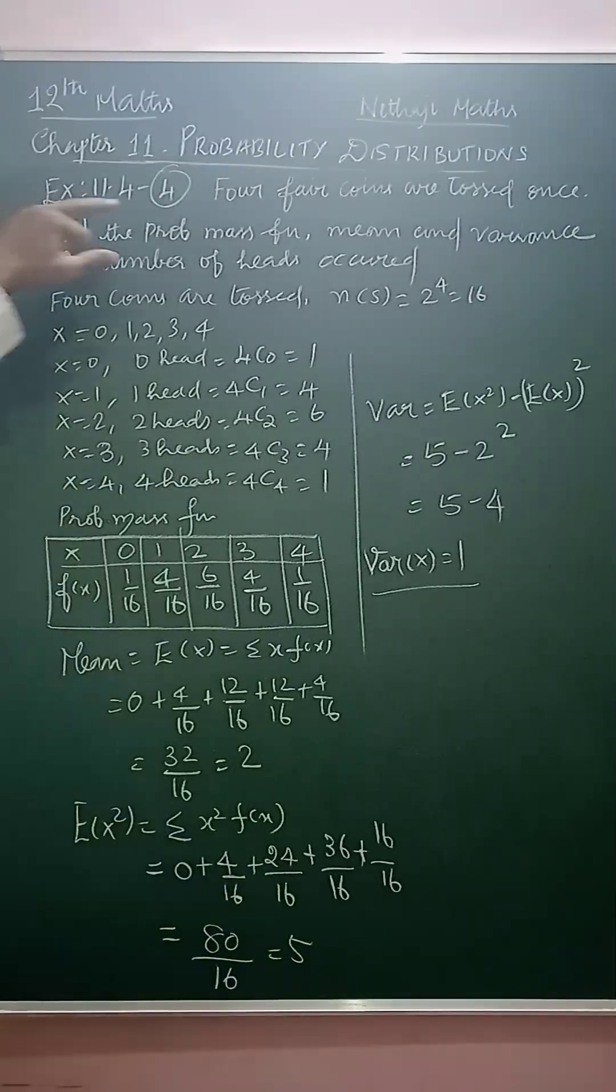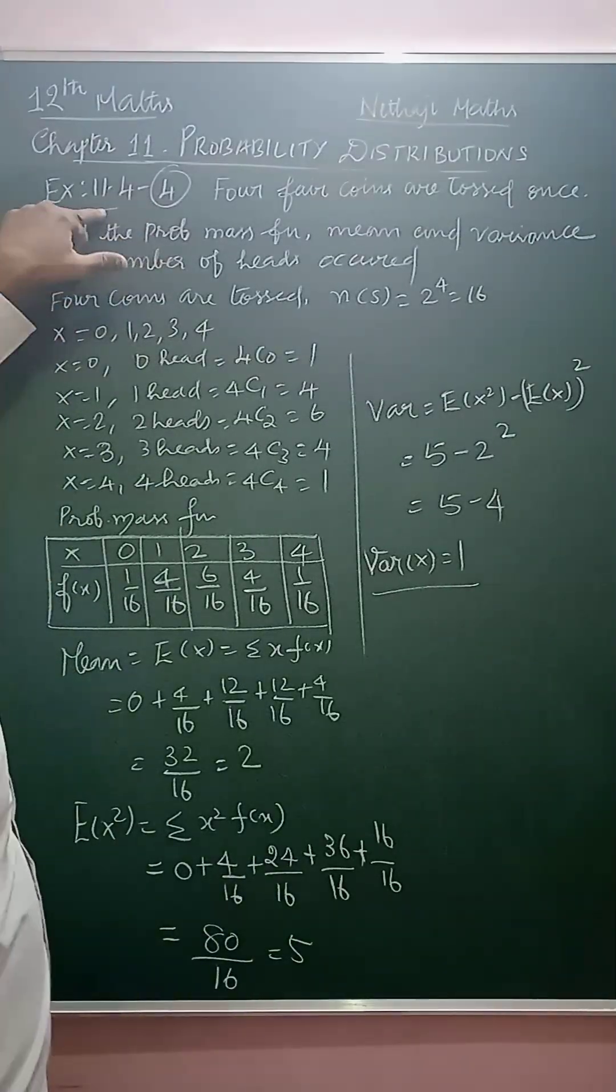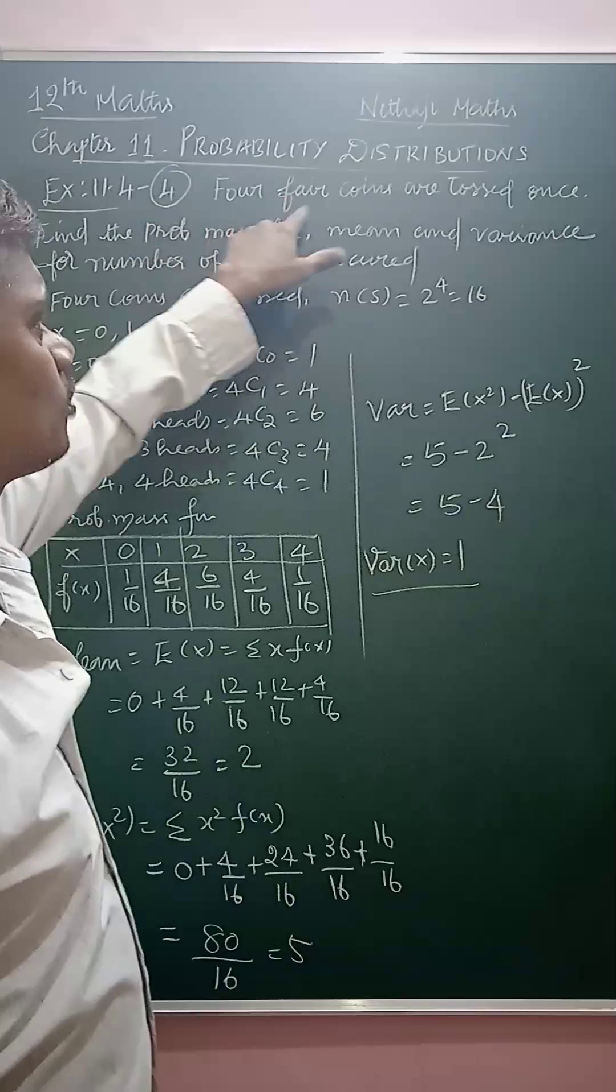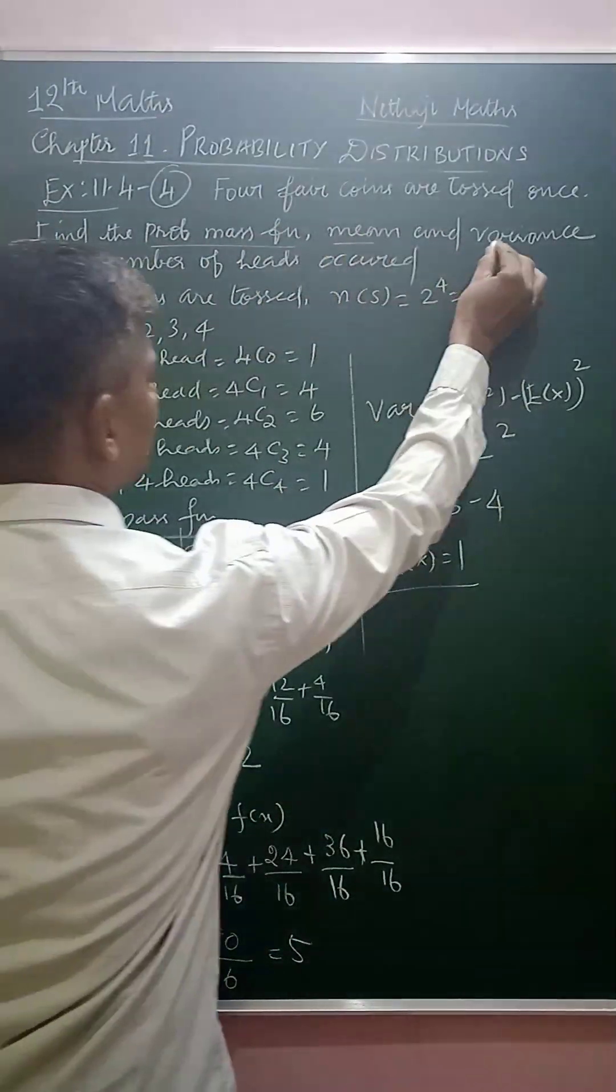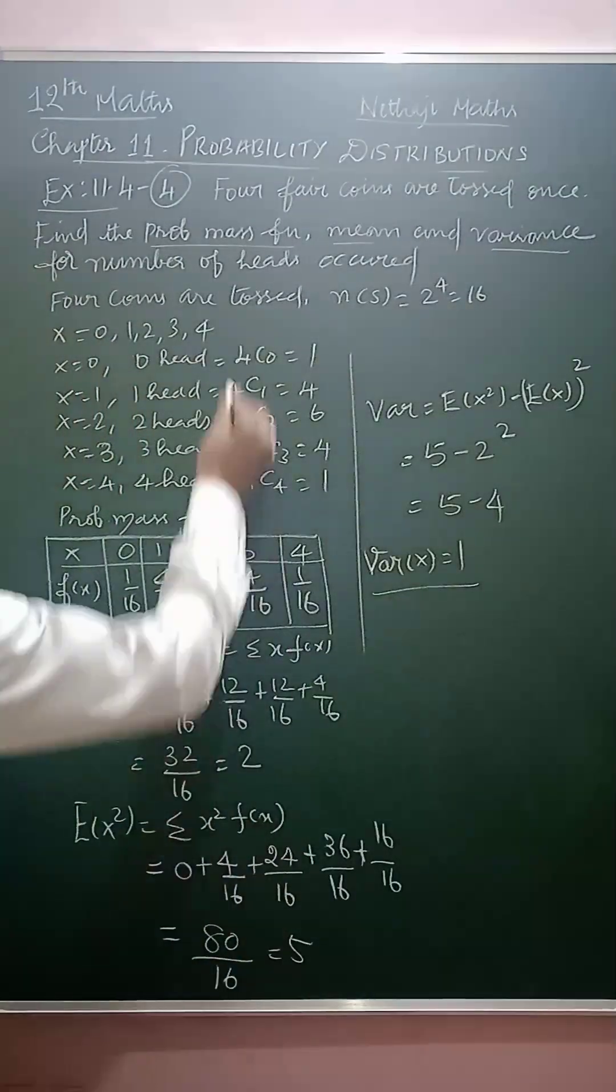Dear children and students, in this video, we are going to learn the fourth sum from the exercise 11.4. The question is, 4 fair coins are tossed once. Find the probability mass function and mean and the variance for the number of heads occurred.